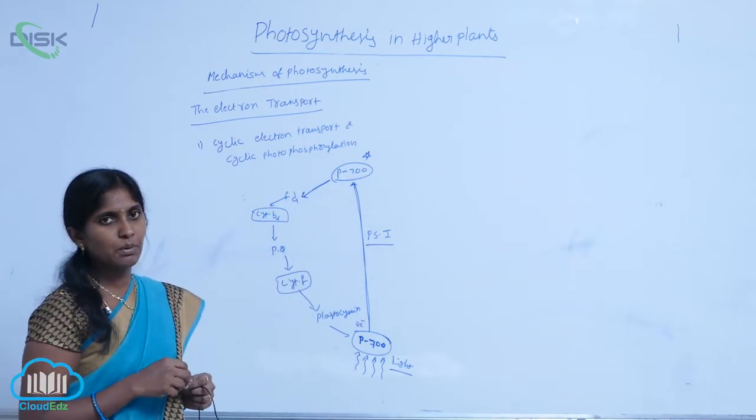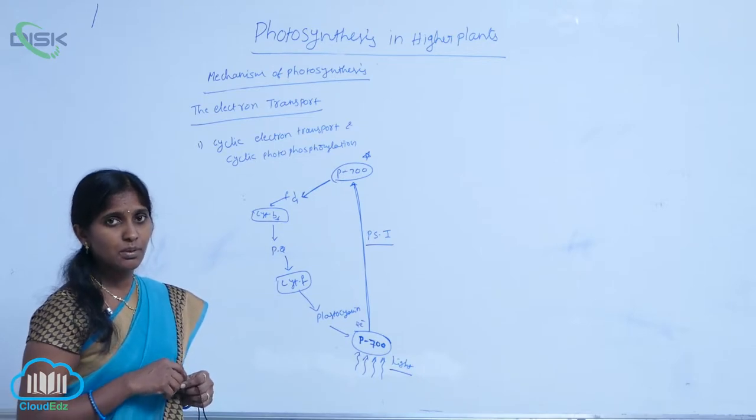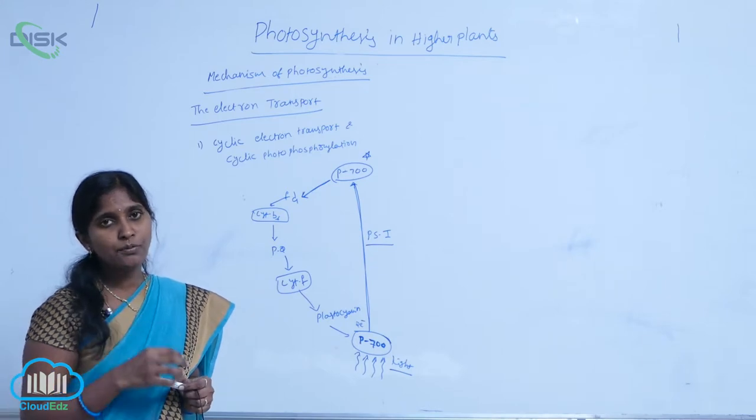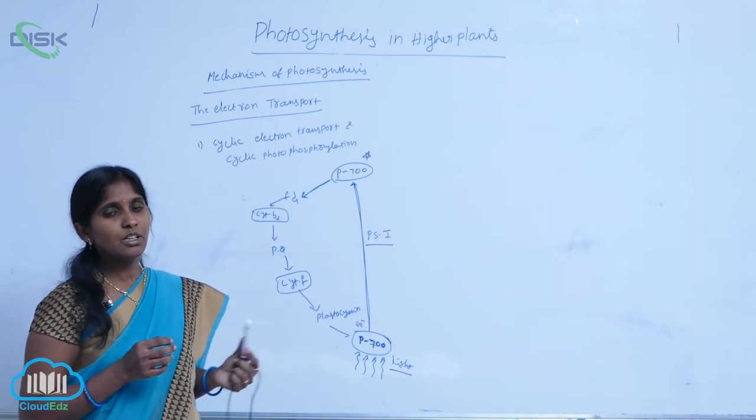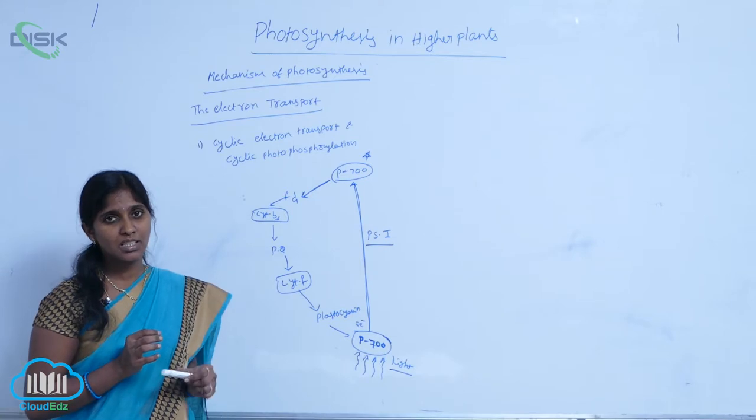Ferredoxin is a colorless pigment. It has a structure analogous to chlorophyll, but instead of Mg²⁺ ions at the center like in chlorophyll, hydrogen ions are present, which makes it colorless.